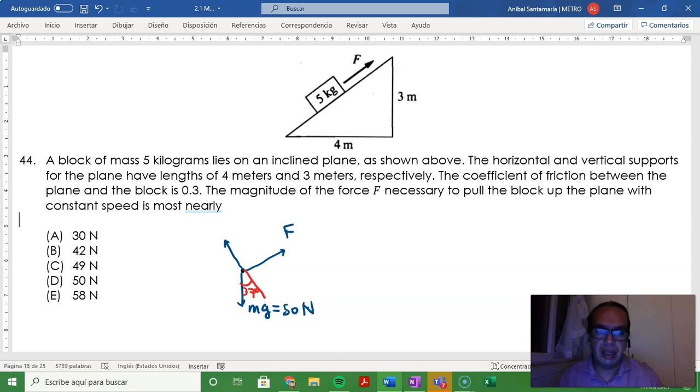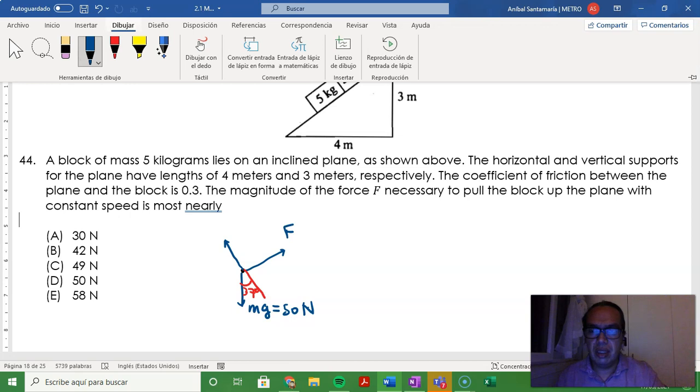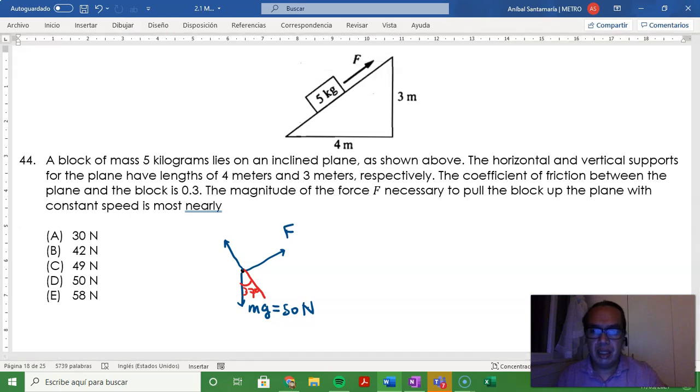One important point to consider is that the 37 degrees of inclination are the same as the angle between the weight and the y component. Therefore, if you want to have a constant speed, you need this force to be equal to both the x component of the weight and the frictional force.